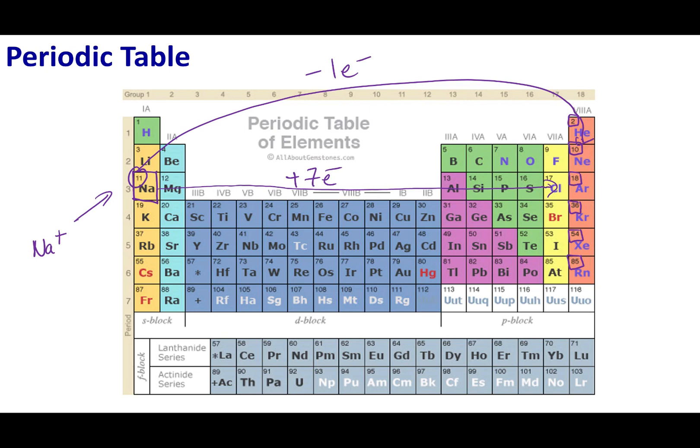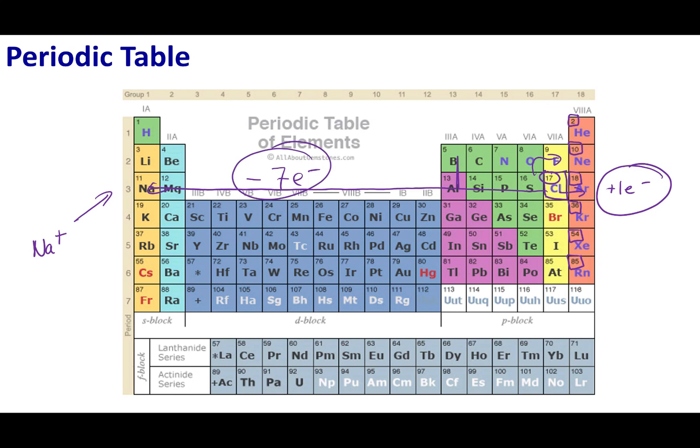Now let's take a look at chlorine. Here's chlorine on the periodic table with 17 electrons. It can gain one electron and be 18 electrons or lose seven electrons and get 10 electrons, the same number as neon. Again, gaining one is easier than losing seven. So chlorine is going to tend to gain one electron.